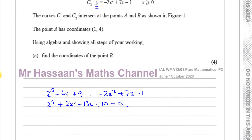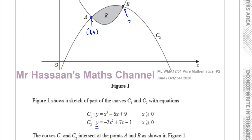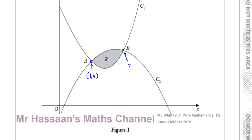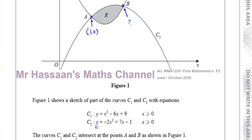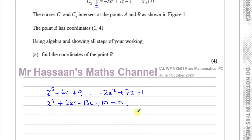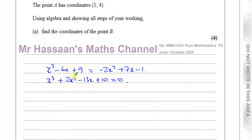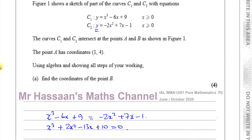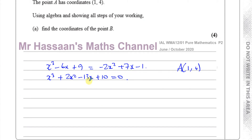There are two solutions A and B to this equation, and possibly more. Since point A has coordinates (1, 4), x equals 1 is one solution. You can confirm this: replacing x with 1 gives 1 plus 2 minus 13 plus 10, which equals 0. So x equals 1 is confirmed as a solution because it's one of the intersection points.